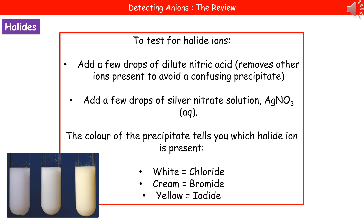The last anion we need to test for are the halide ions — the ions of the halogens in group 7. We add a few drops of dilute nitric acid first to remove any other ions that might give a confusing precipitate color. Then we add a few drops of silver nitrate solution. Depending on the color of the precipitate: white means chloride ions, cream means bromide ions, and yellow means iodide ions.